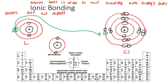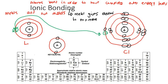So we can see that the metal, which was lithium, gave its electron to the non-metal. That's another key point about ionic bonding: the metal gives one or more electrons to the non-metal. That is ionic bonding — when a metal and a non-metal bond, one gives its electrons away and the other accepts them.